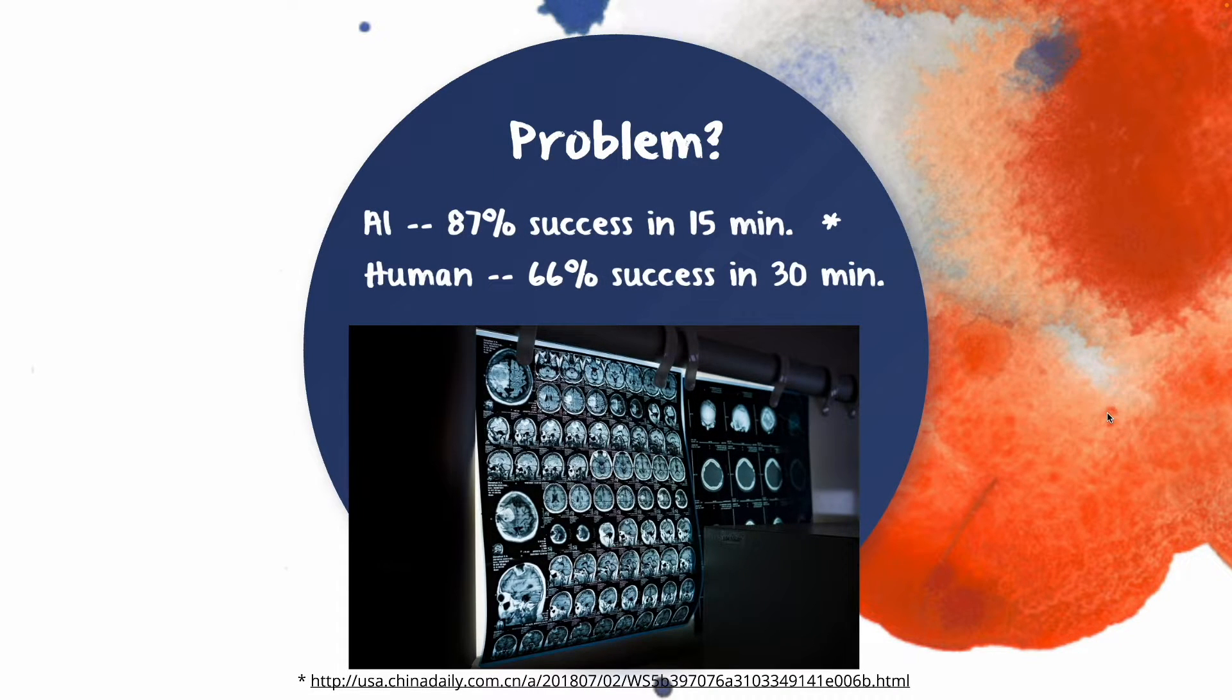For example, in 2018, AI defeated top doctors in a competition. Task was disease diagnosis, brain tumor diagnosis, and the results were interesting because AI's accuracy was 87% and they completed the task in 15 minutes. However, doctors' team's accuracy was 66% and they completed the task in 30 minutes. So AI was faster and more successful.